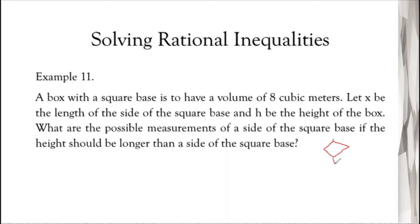We can sketch the box: it's three-dimensional in a vertical position. It has two square bases, so the height is labeled h, and the sides of the square base are both labeled x. So the illustration shows height h and square base sides x and x.